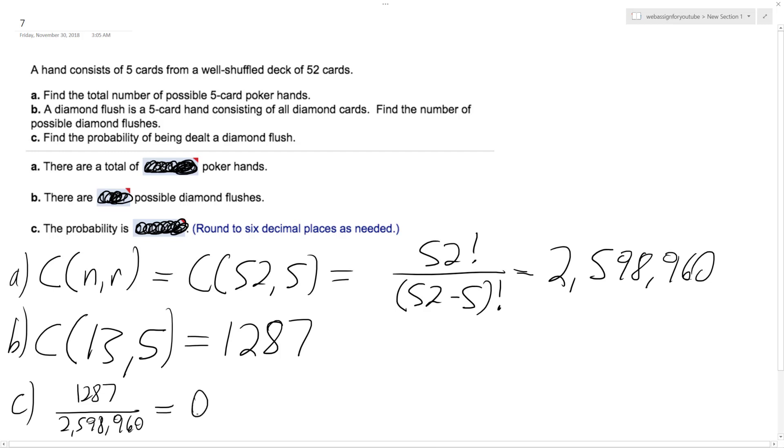And this ends up being equal to, rounded to six decimal places, 0.000495. And I'll check real quick with what I have up here. And yes, this does match up. And that's it. Alright, I hope this helped you out. Thanks for watching. Have a great.